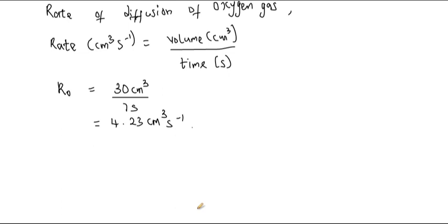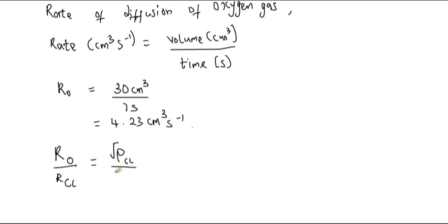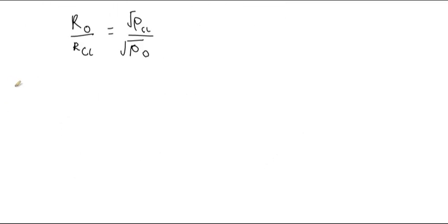We cannot yet calculate the rate of diffusion of chlorine gas because the time it takes to diffuse is unknown. Going back to the formula, replacing the subscripts with oxygen and chlorine: r_O over r_Cl equals the square root of the density of chlorine divided by the square root of the density of oxygen. The rate of oxygen is 4.23 centimeter cube per second.